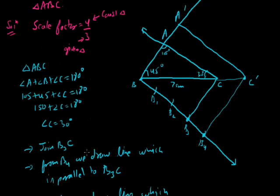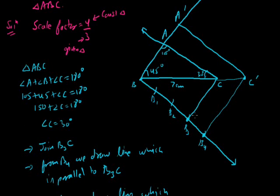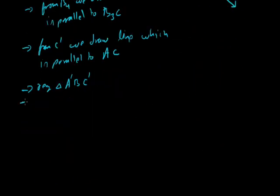Triangle A dash B C dash is similar to ABC and its sides are 4/3 times the sides of triangle ABC. The justification for this case follows the same approach as before — in triangle B B4 C dash, B3C is parallel to B4C dash, so we can apply BPT similarly. I think you can do it. So that's about triangles. In the next part we will discuss construction of circles — how we can draw tangents to a circle. Thank you.